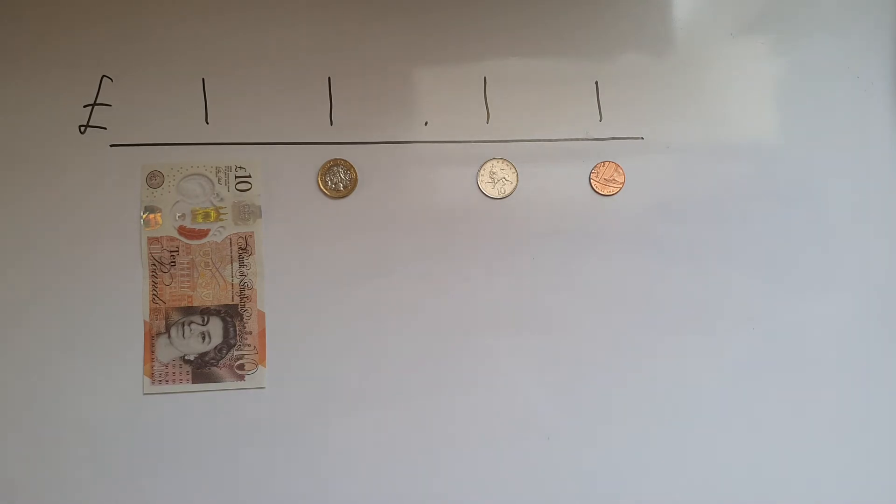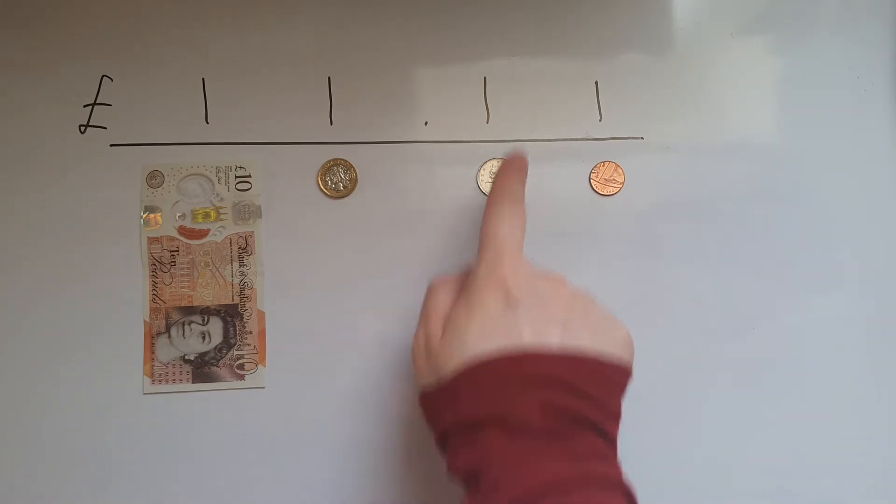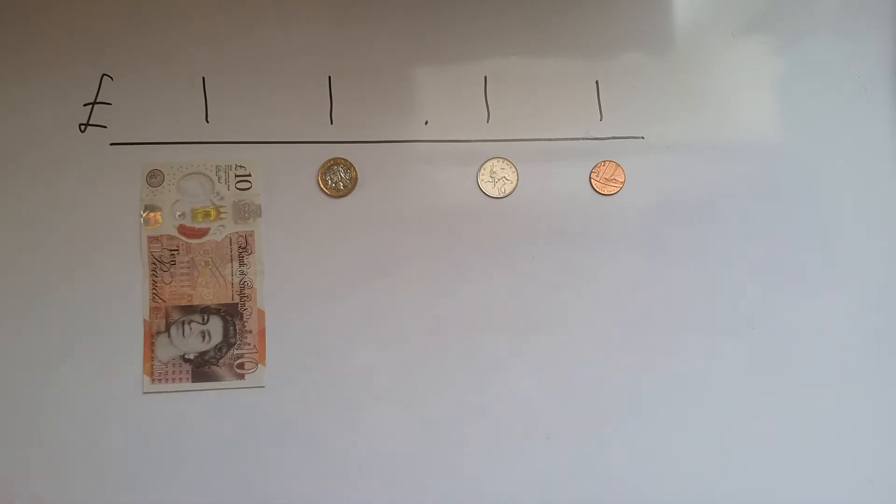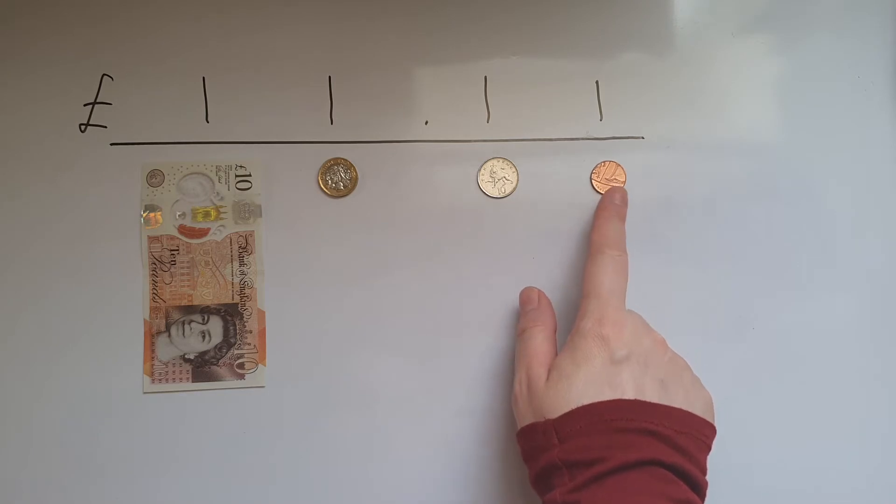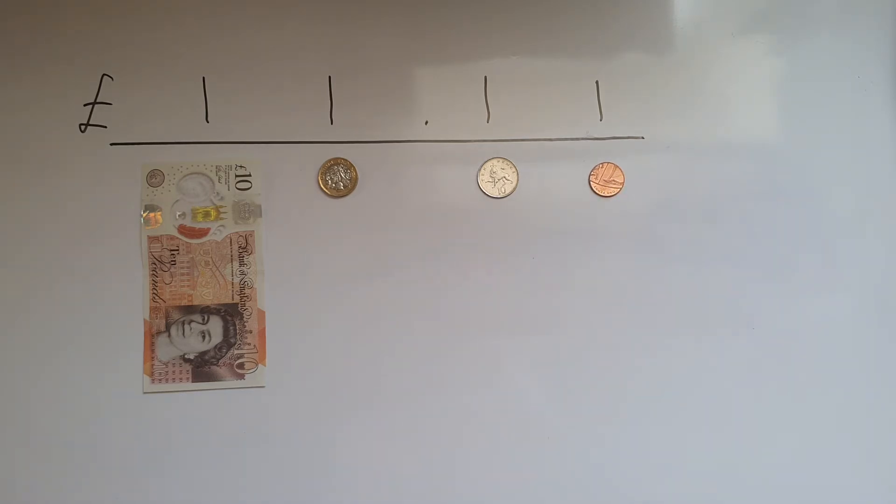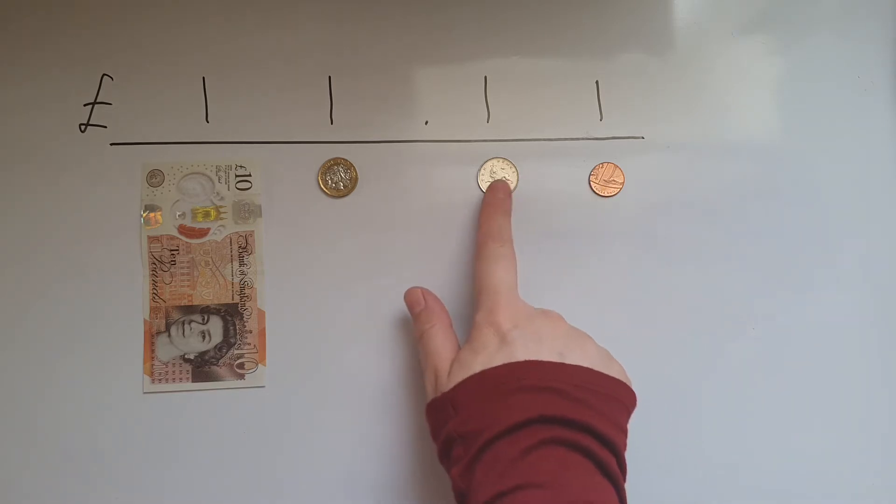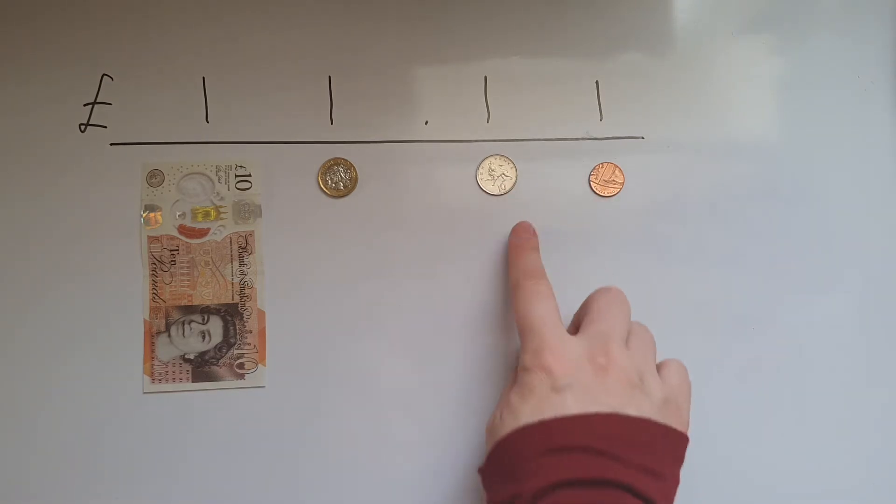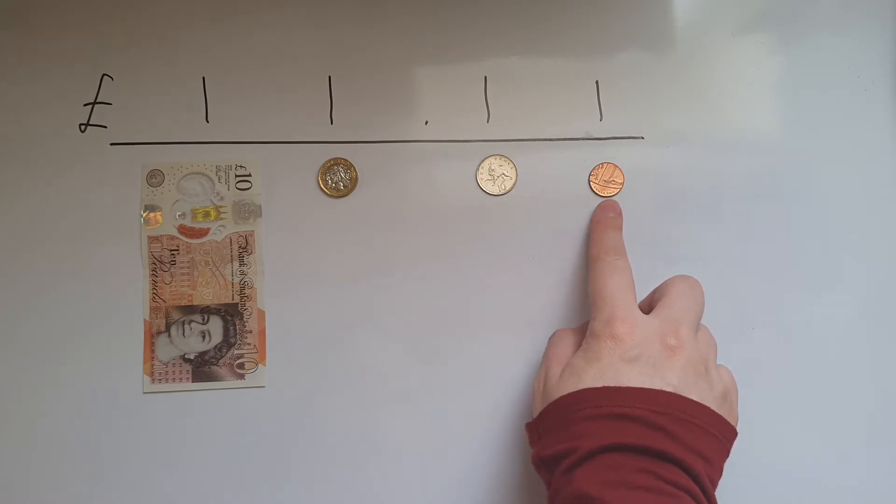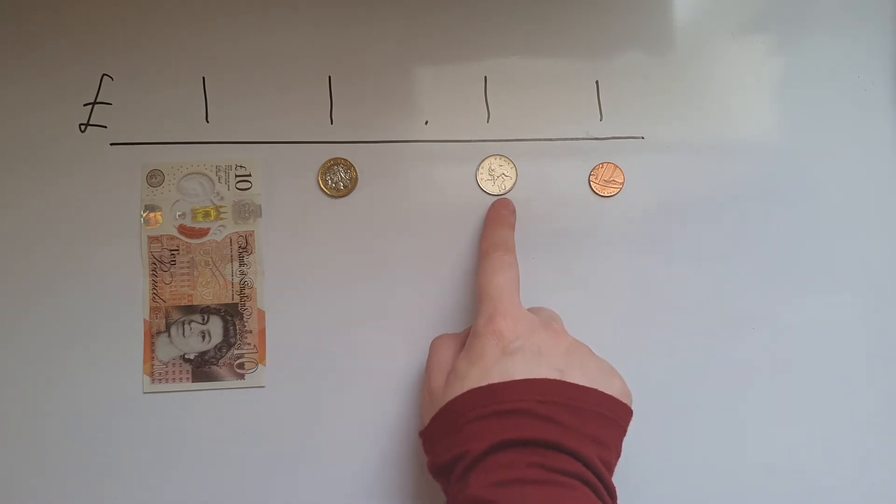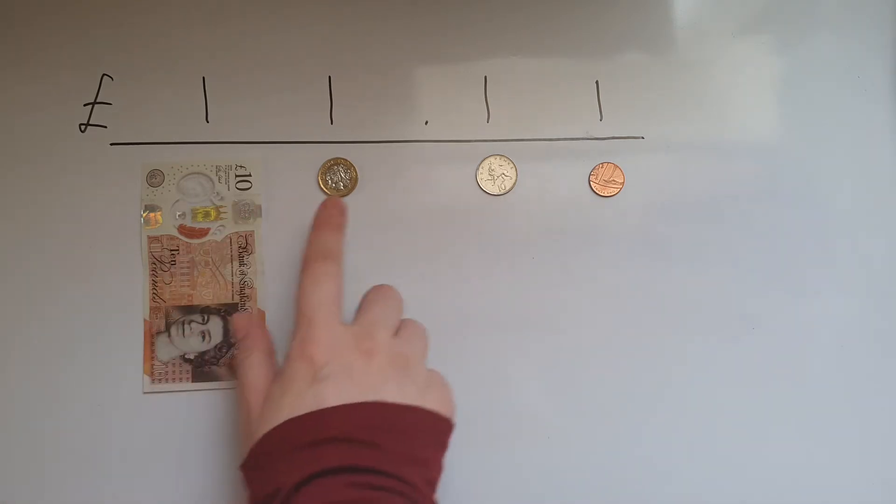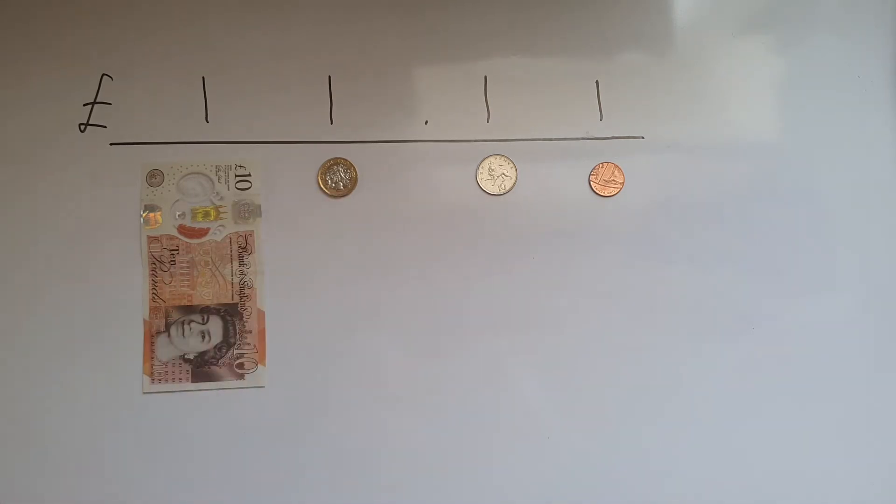As you can see, the value of each of the digits as it moves - the value of each of the digits on the right is equal to ten of the digits. So the ten pence is equal to ten lots of one pence. One pound is equal to ten lots of ten pence. Ten pounds is equal to ten lots of one pound and the pattern continues.